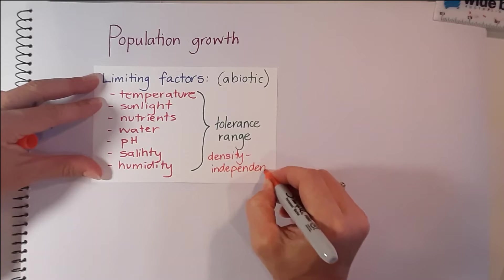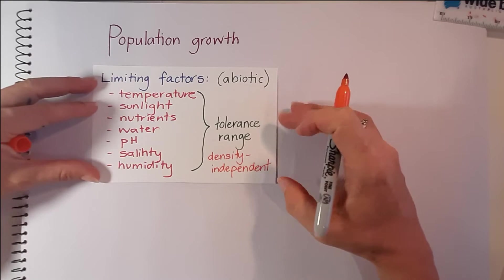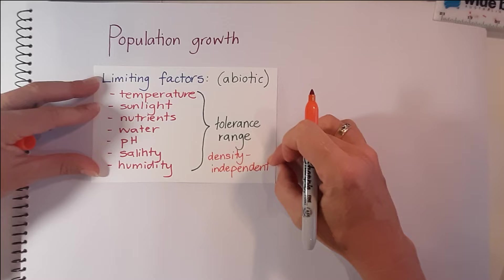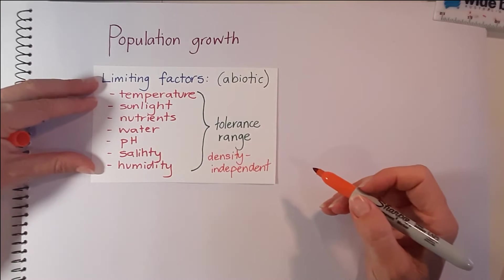It doesn't matter if the individuals are living in an area where there is a high density of that population or a low density of that population. So we call this, the abiotic factors are density independent.